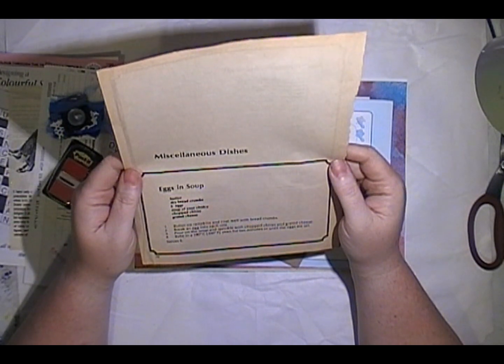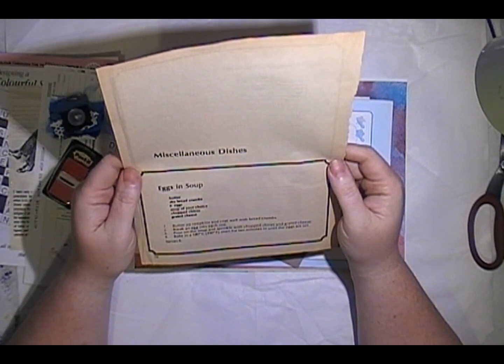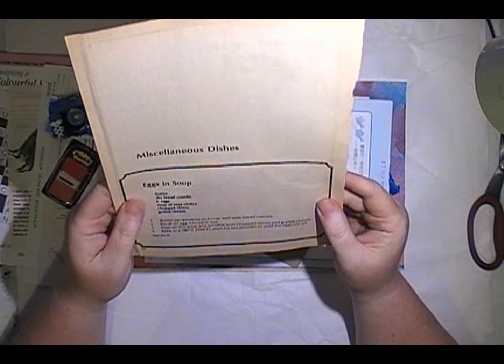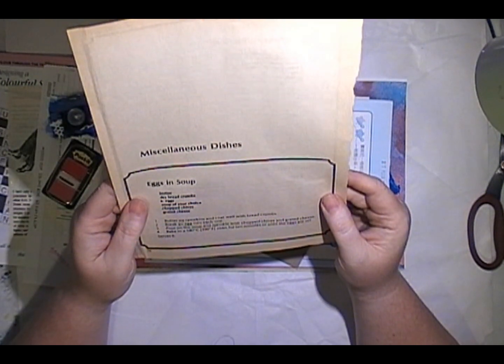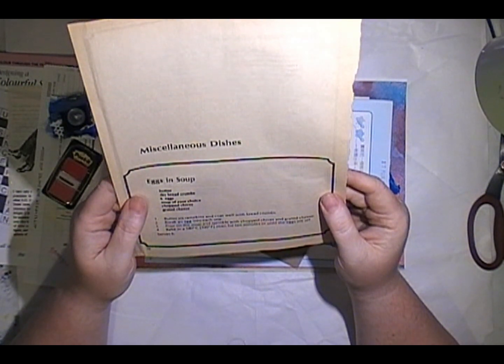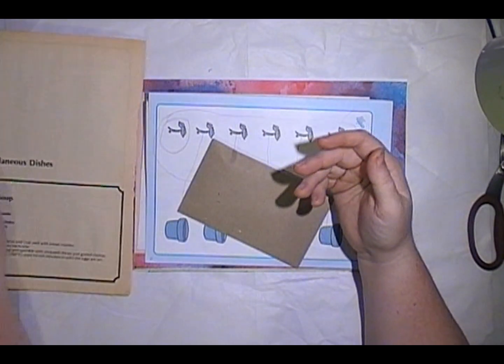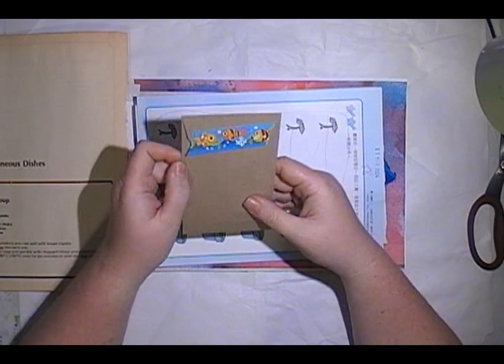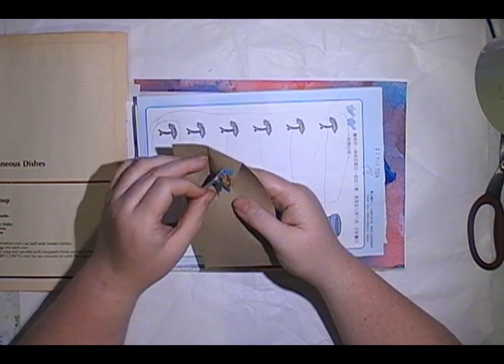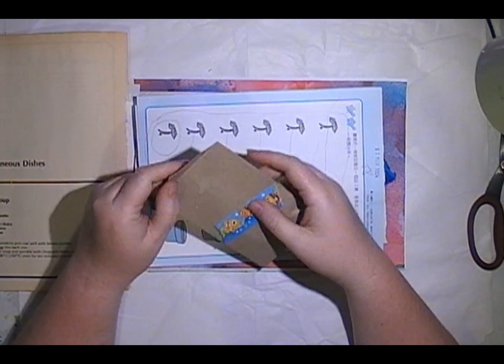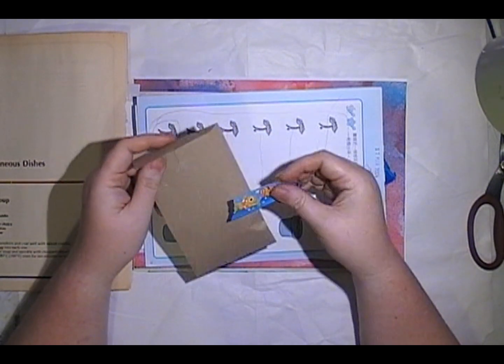Indonesian omelet, vegetarian and meat frittata - that looks really old. Miscellaneous dishes, egg in soup. Ingredients: butter, dried breadcrumbs, six eggs, soup of your choice, chopped chives. Butter six ramekins and coat well with breadcrumbs, break an egg into each one, pour in soup, sprinkle with chopped chives and grated cheese, bake. Well, it is egg in soup, isn't it? That's funny! Some of the old recipes are just hilarious to read.